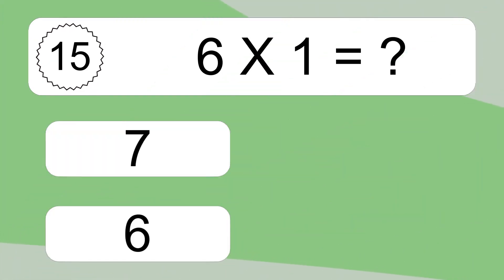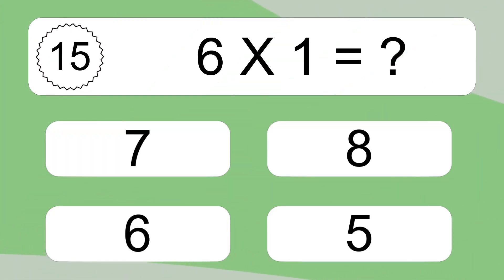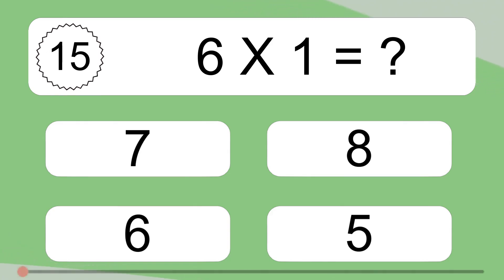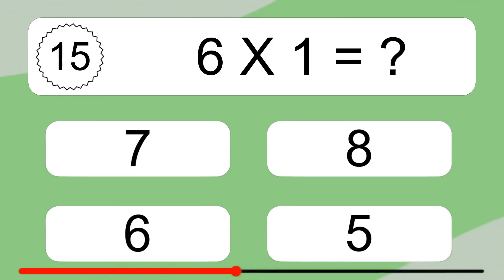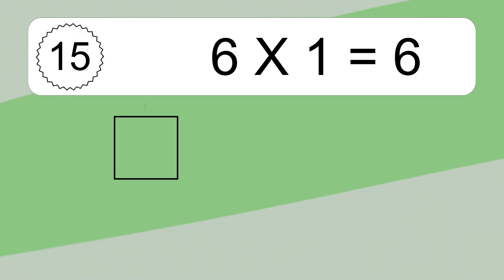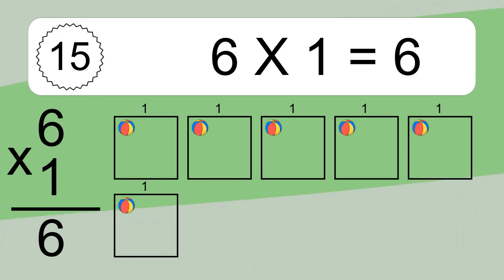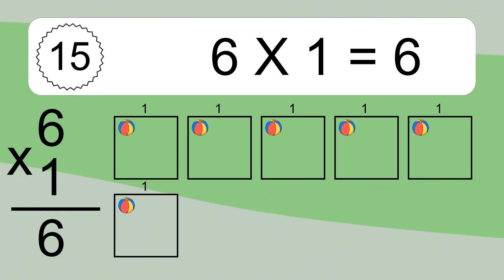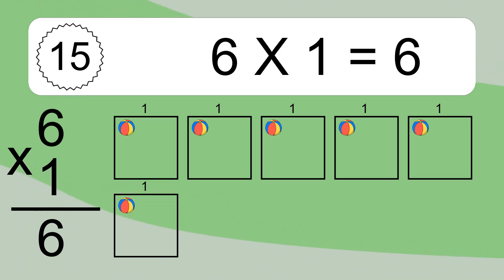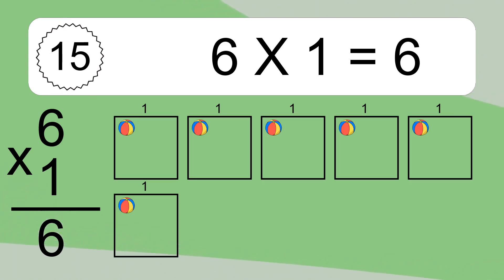6 times 1 equals what? 6 times 1 equals 6. We have six boxes and each box has one colorful ball inside. If you count all the balls in all the boxes together, you will have six times one balls. This equals six balls.